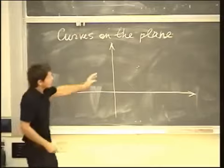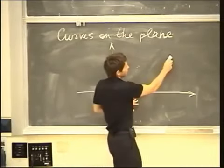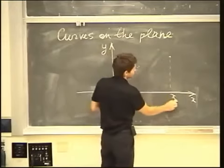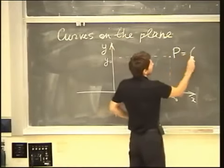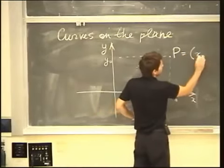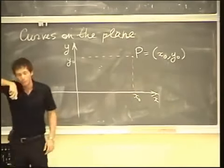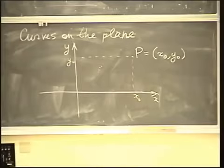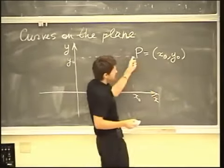Once we do that, every point gets a name. Every point is going to have a coordinate — an x coordinate. Usually we call this x and y. We can talk about a point as being defined by these two coordinates. It's like the address of this point — a uniquely defined address. There's only one point which has this address, and conversely, for any pair of numbers x0, y0, you have a well-defined point.